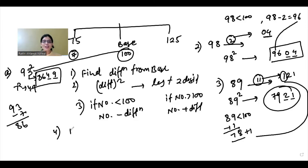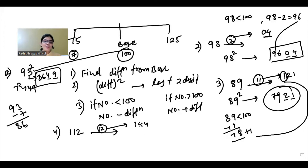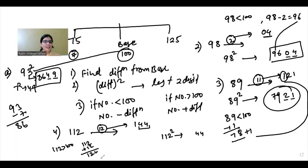Now find 112 squared. The difference from the base 100 is 12. Twelve squared is 144. The last two digits of the answer are 44, and 1 is carried forward. Since 112 is greater than 100, we do 112 plus 12, which equals 124. Adding the carried 1 gives 125. So the answer is 12544.